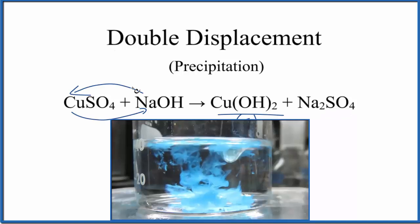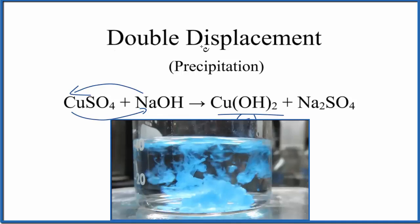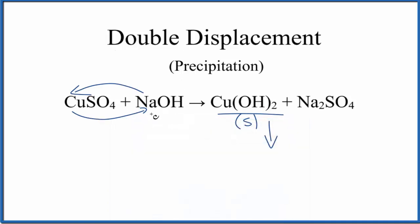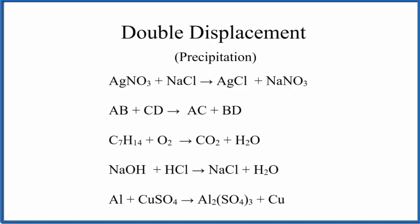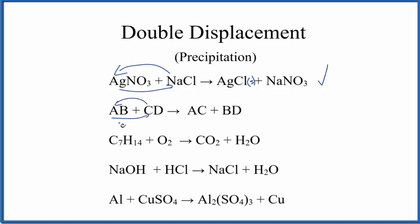These two metals switch places in a double displacement reaction. Pause and identify the double displacement reactions from this list. In the first one, the silver and the sodium are switching places — this is a double displacement reaction, and the silver chloride would be our precipitate. In the general format, you can see A and C switch places, giving us AC and BD. Here we just have oxygen, so we can't really have a double displacement — this is combustion, because we have oxygen, carbon dioxide, and water involved.